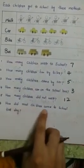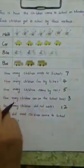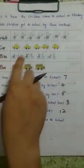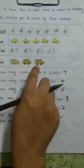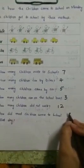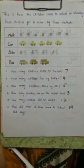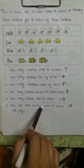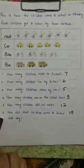How did most children come to school that day? The day was Monday and we count all the children: we have 7 who walked, then continuing: 8, 9, 10, 11, 12, 13, 14, 15, 16, 17, 18, 19 — 19 total students came to school that day. Hope you understand the topic. It's very easy. You can do the practice in your notebooks. We will meet on the next topic. Inshallah, Allah Hafiz.